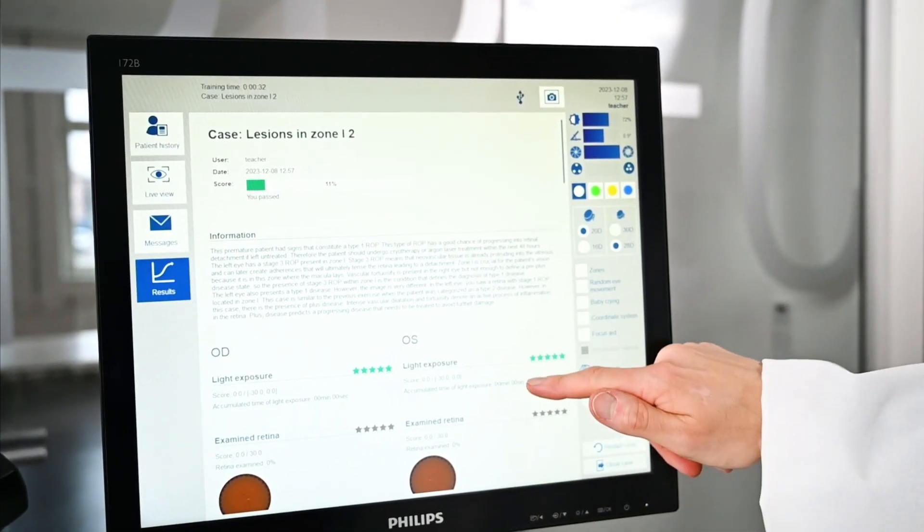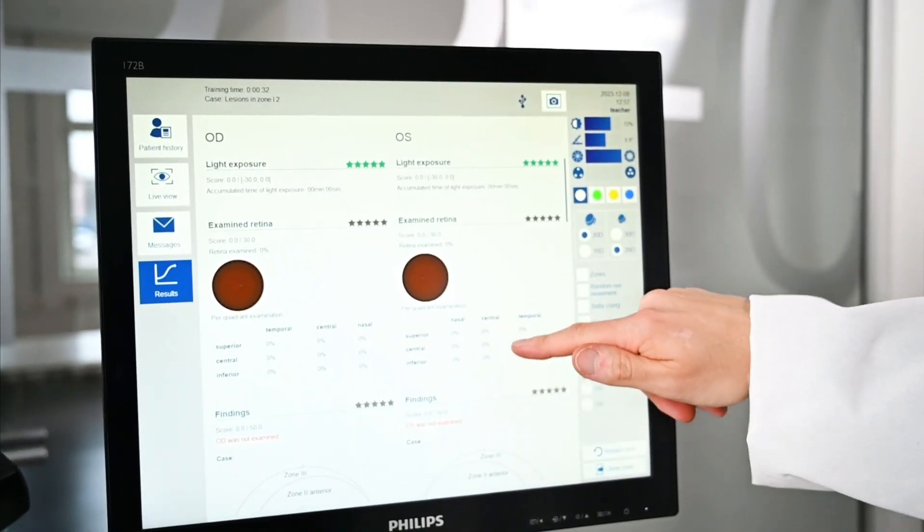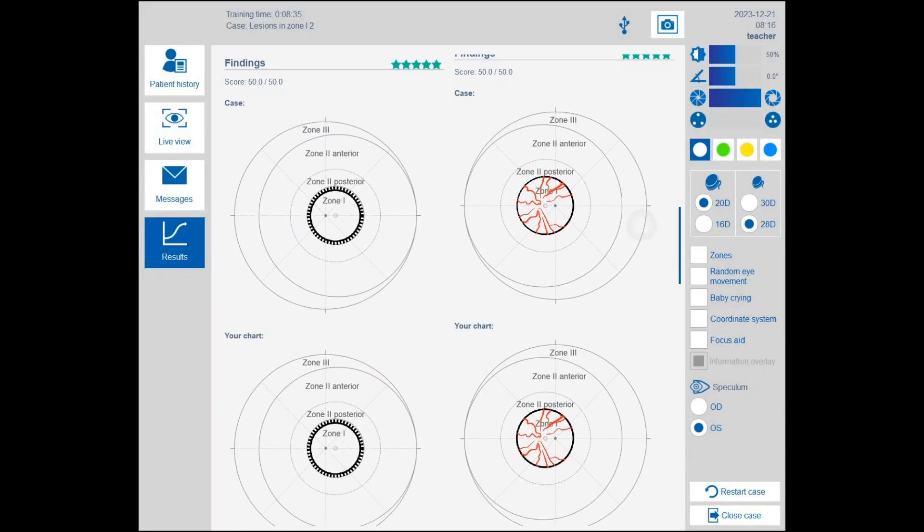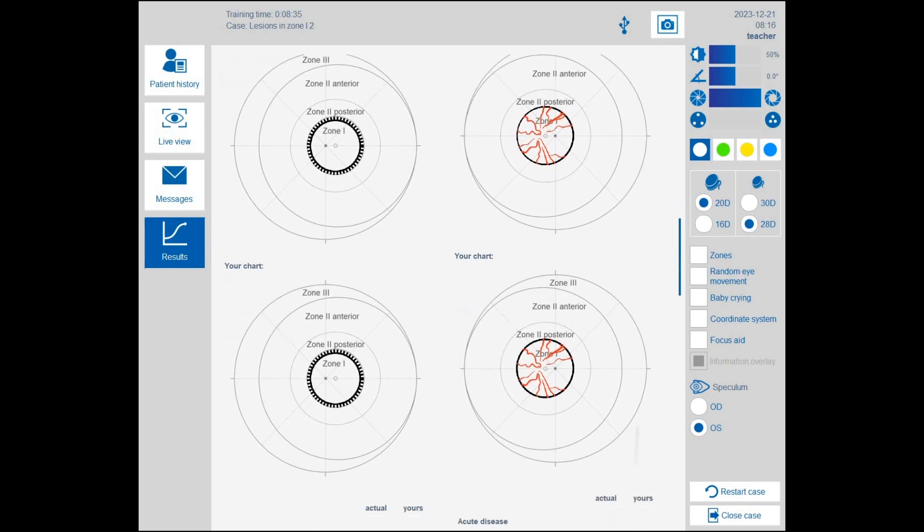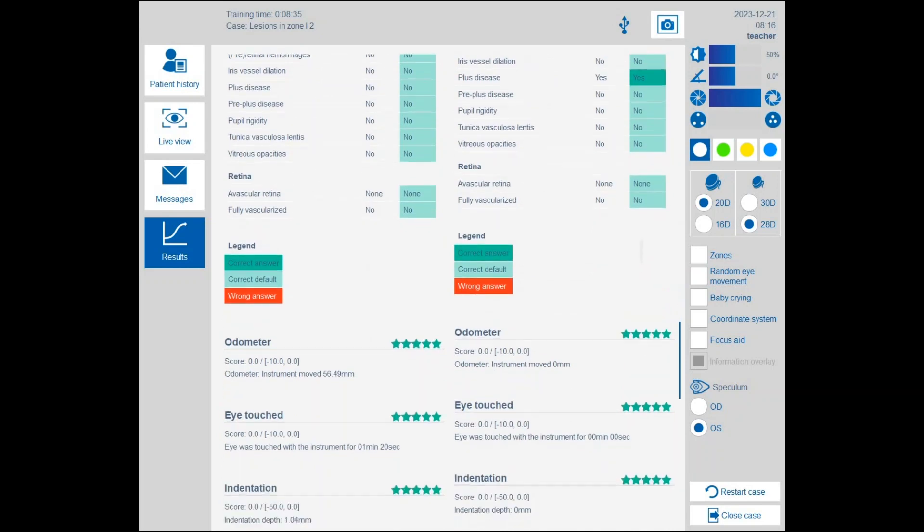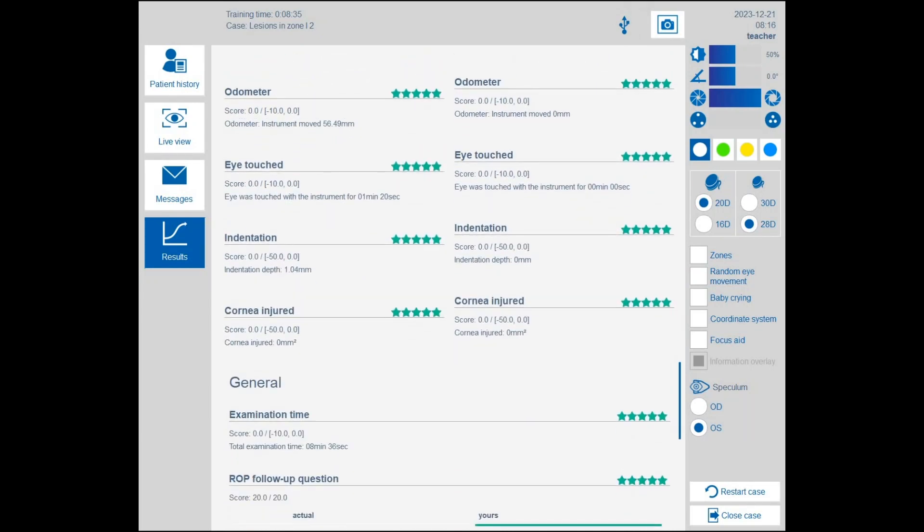After each case, the IC Indirect ROP presents trainees with a detailed performance summary showing, for example, the light exposure, correctness of findings, and appropriate use of indentation. The objective assessment allows trainees to improve their skills systematically.